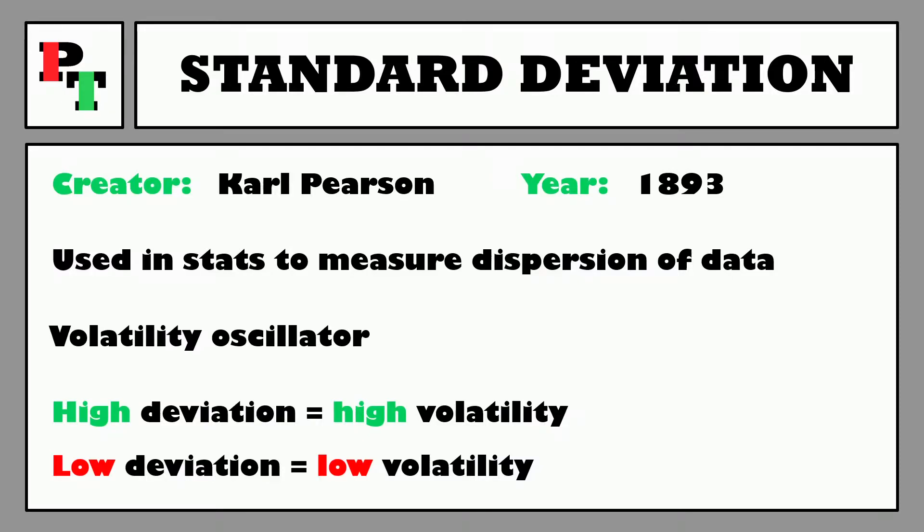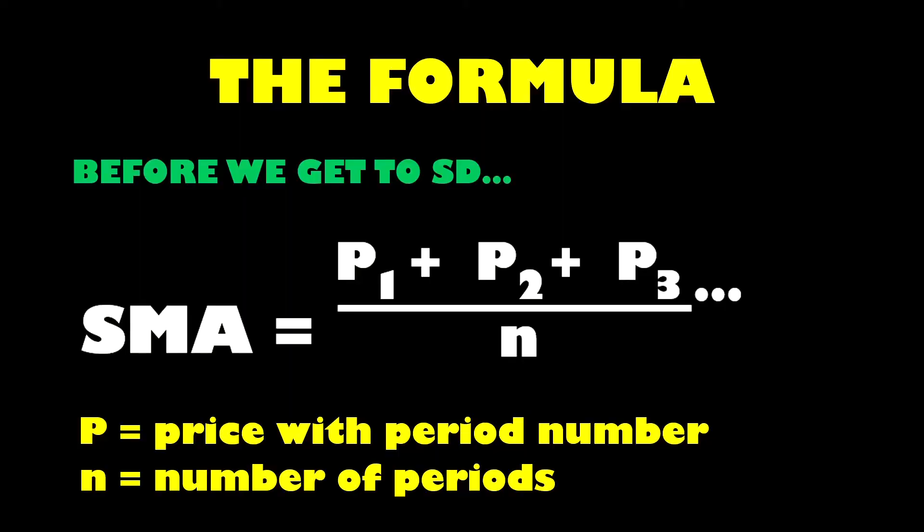Let's see that formula so we can understand how it all works. First we just have to do a quick simple moving average calculation as we're going to use that as our mean average in the formula. That is just adding together the price for each of the individual periods that you are looking back at and dividing that by the total number of periods.